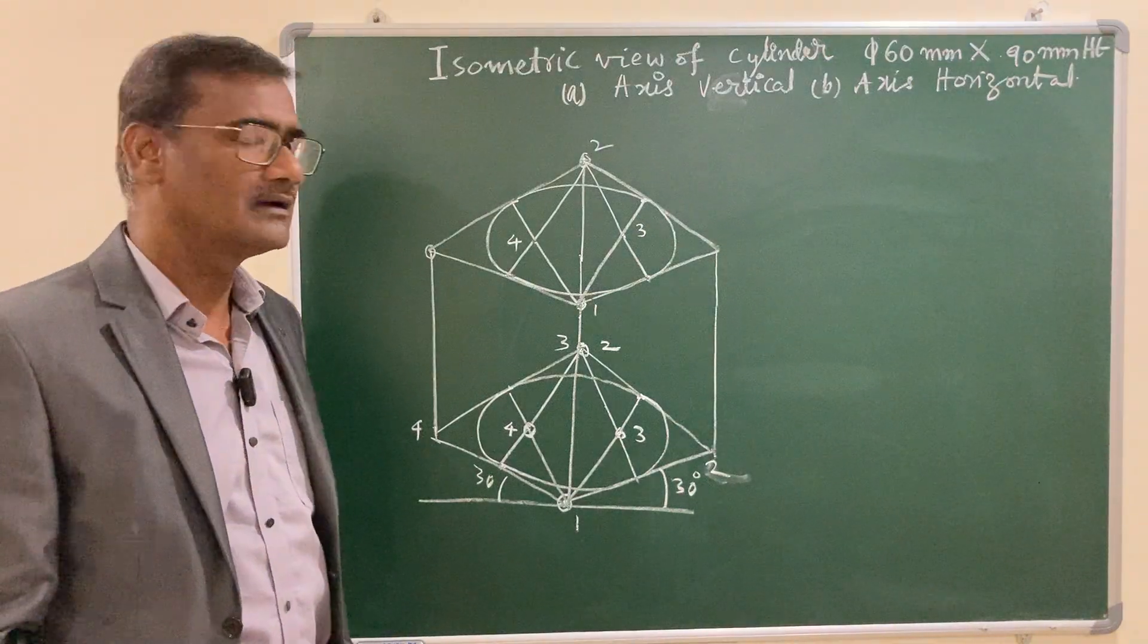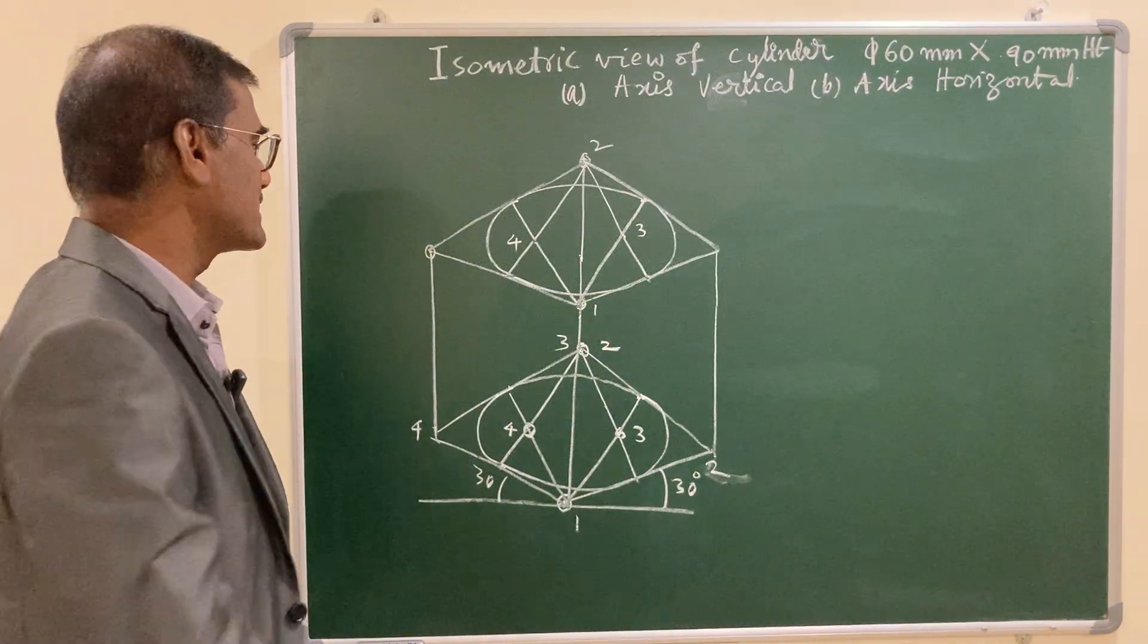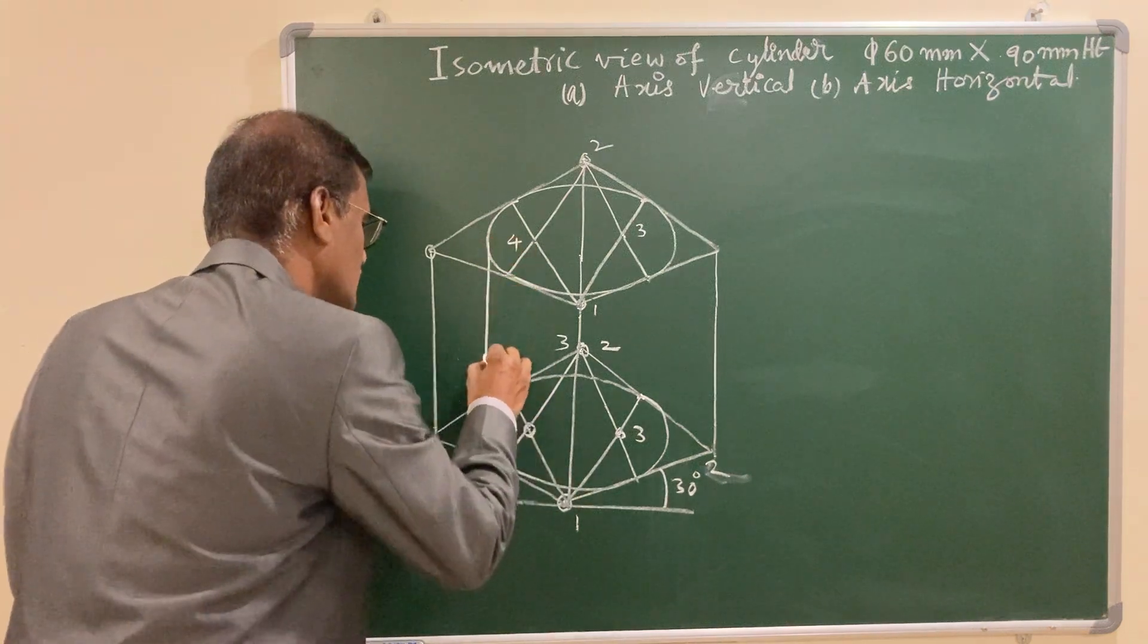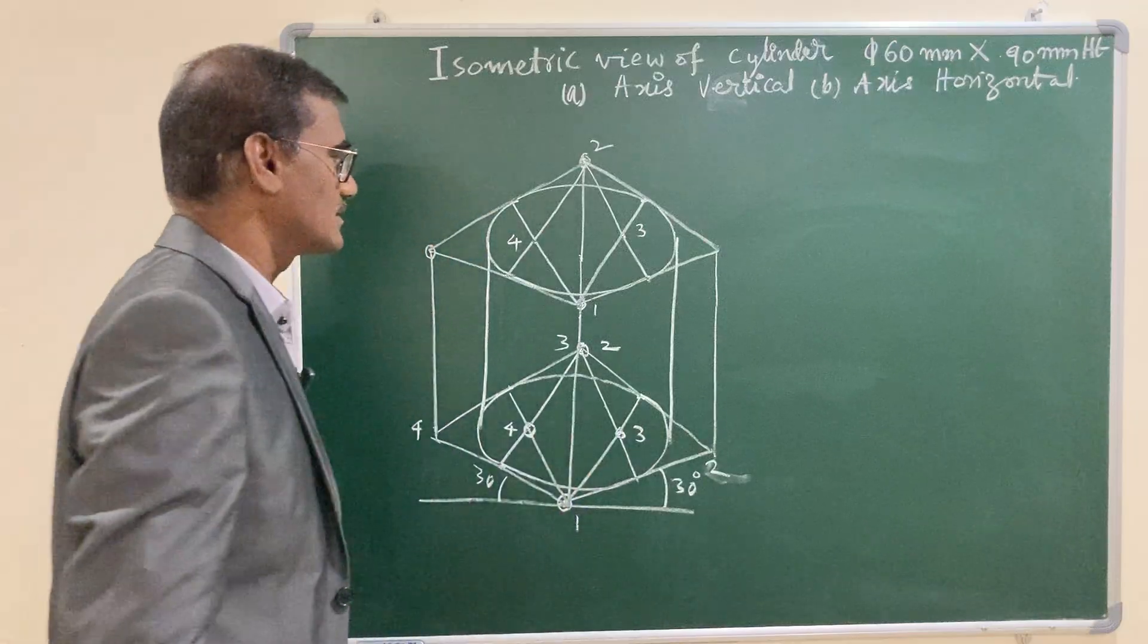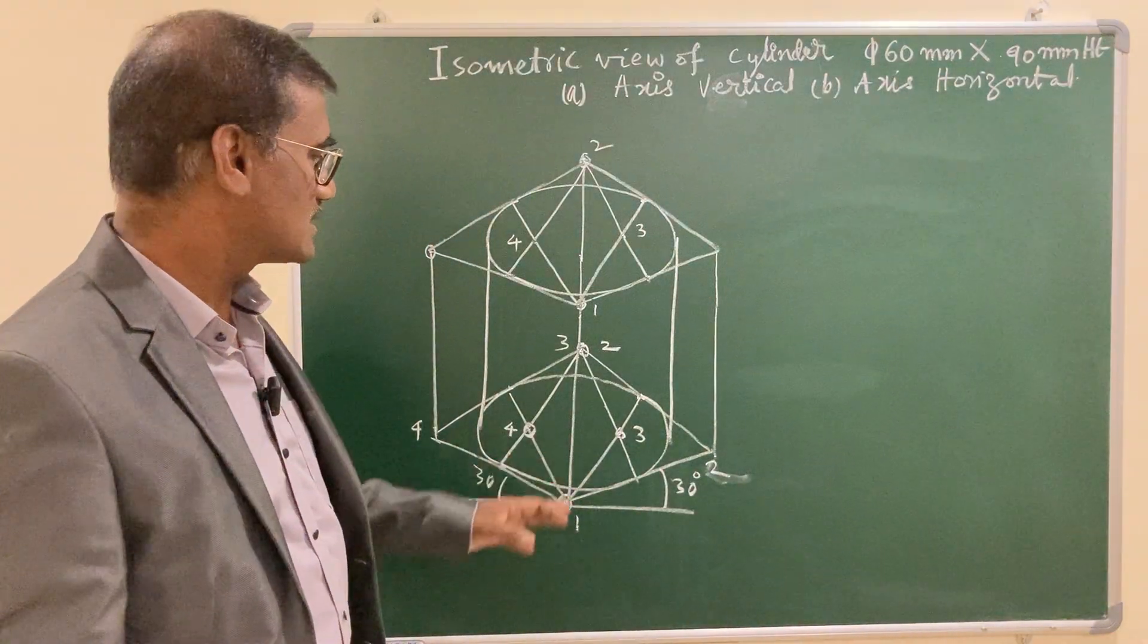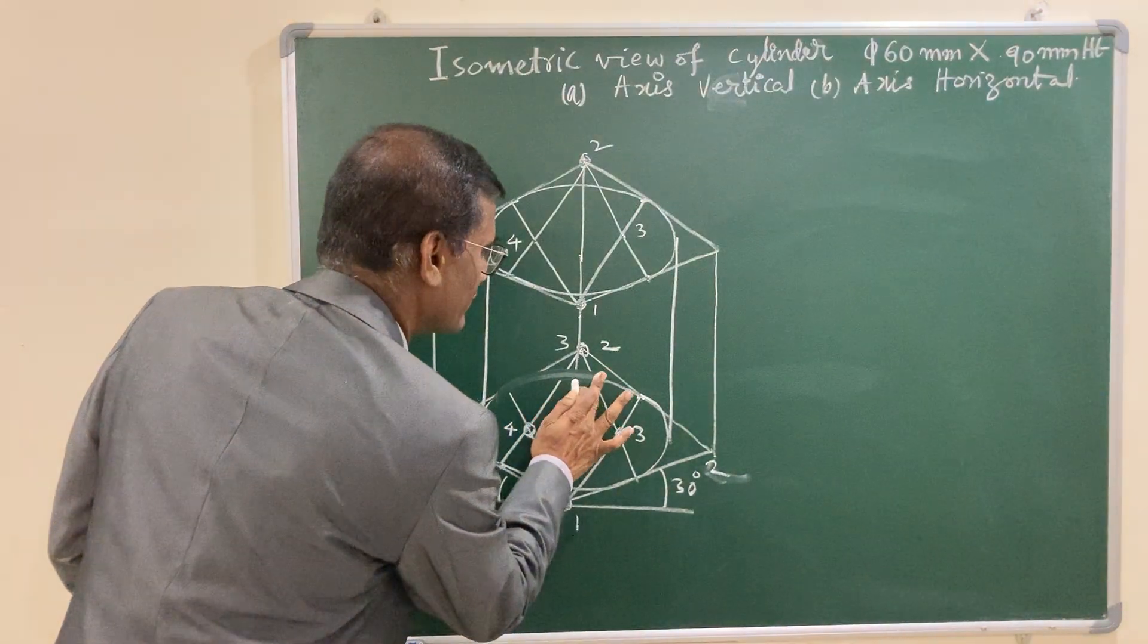After completing the top and bottom view of the cylinder, let us draw a common tangent to the bottom and top ellipse. The bottom inside semicircular arc is not visible, usually in isometric view.